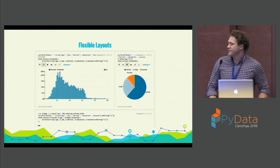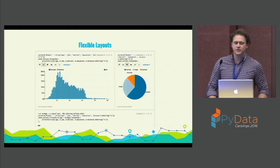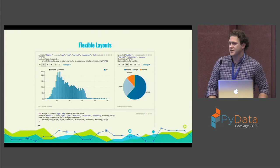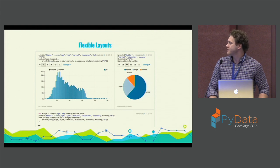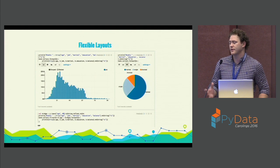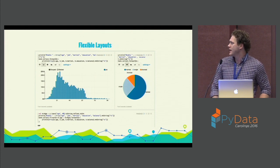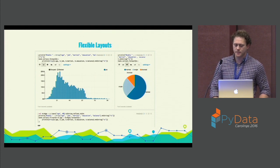Zeppelin notebooks also have very flexible layouts, something that is currently missing from Jupyter. You're able to set the width of your paragraphs — these are called paragraphs in Zeppelin instead of cells — and you can set the paragraph width and move them up and down and arrange them at will.